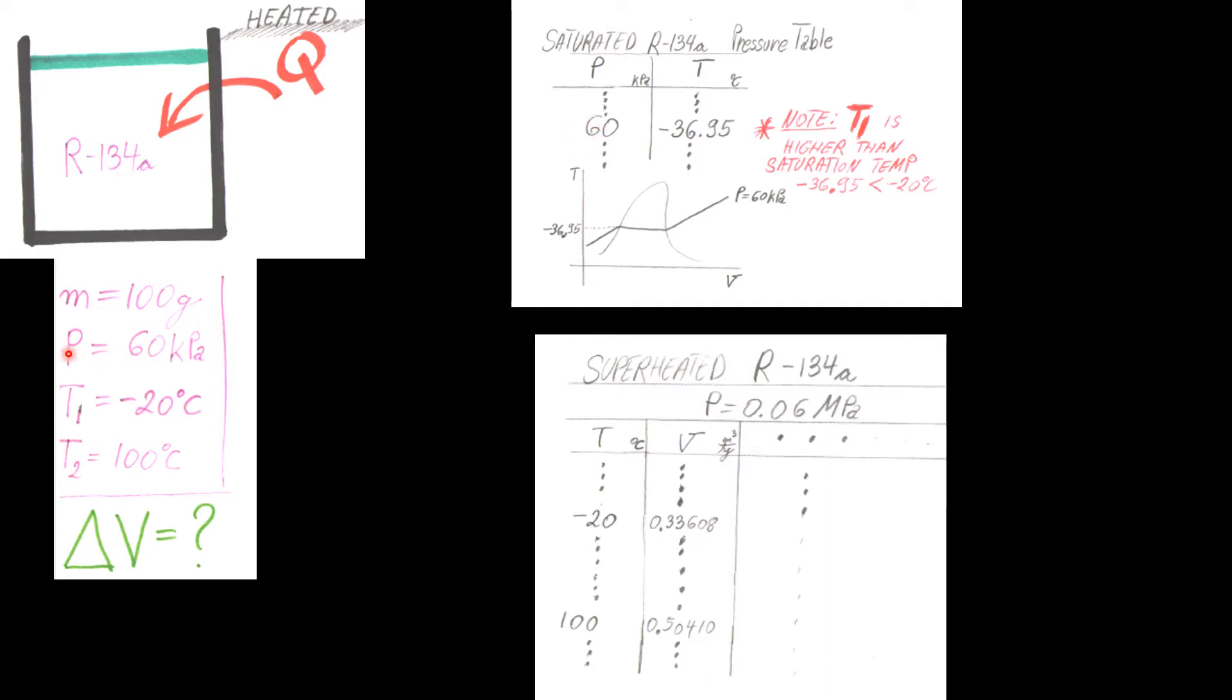In the table you're going to see a bunch of properties. We're going to take a look at the temperature. It says negative 36.95. This means that this fluid is saturated when at this pressure and this temperature. Now we see that our temperature is negative 20. That means that this is larger than the saturation point.